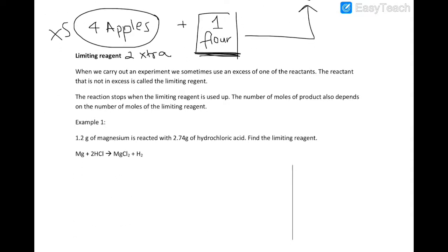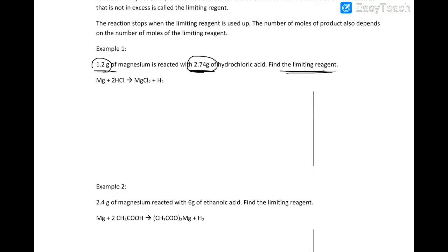Similarly, in a chemical reaction — especially when you are given the mass of both reagents — one of them is generally in excess and one is limiting the reaction. Whenever you are given the mass or the number of moles of both reagents, find the limiting reagent before you start any calculation.